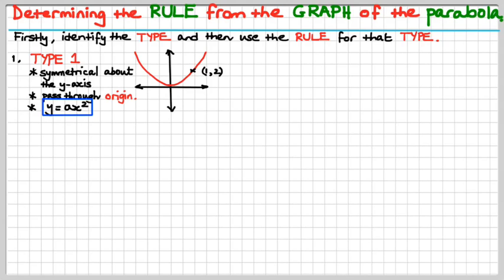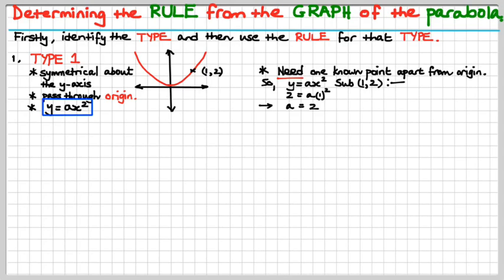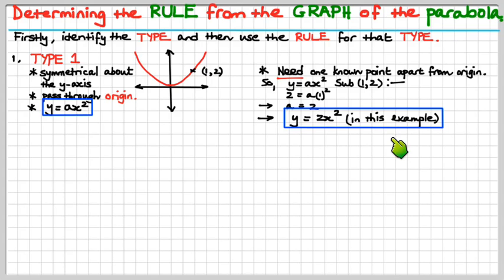So that's the equation that you use for a type 1 to solve for the rule of that parabola in that graph. Now what you need is you need a one known point apart from the origin, and we do have that. So we've got y equals ax squared. Let's substitute 1 and 2 into that expression. y is 2, x is 1. We get that. Therefore, a just comes out easily as number 2. So here's y equals 2x squared parabola in this example. That's the rule. That was easy, wasn't it?